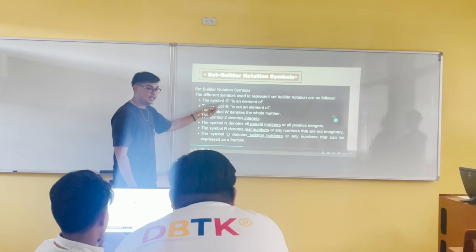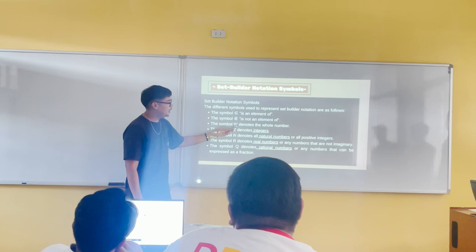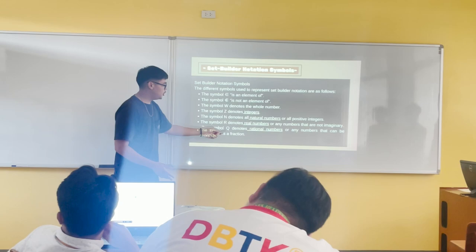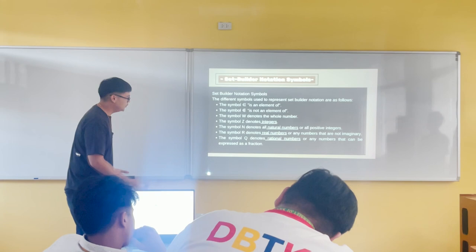Here are the meanings of the symbols. The symbol ∈ means 'element of.' The symbol ∉ (E with a dash) means 'not an element of.' W denotes whole numbers. Z denotes integers. N denotes all natural numbers. R denotes all real numbers. Q means rational numbers — any numbers that can be expressed as a fraction.